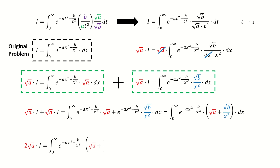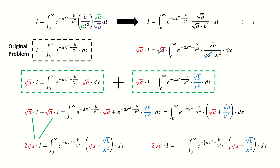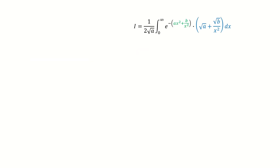For the left-hand side, it equals to 2 times square root of a times I. And then we write the right-hand side into this form. Note for the exponential function — we take this negative sign out. Next, we multiply this green factor on both sides, so these two terms cancel out. I copy it here. And then we make a substitution: we let u equal to the subtraction of these two terms. Note here, when x approaches to 0 from the positive side, then u approaches to negative infinity. We will use this important limit later.